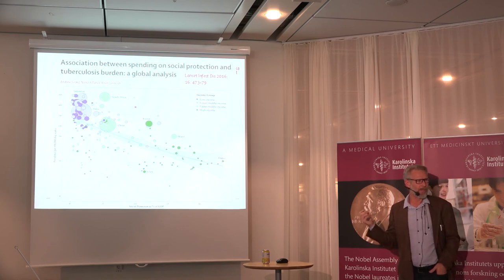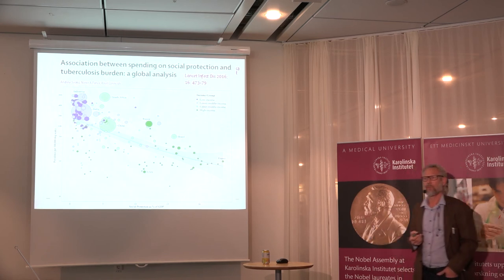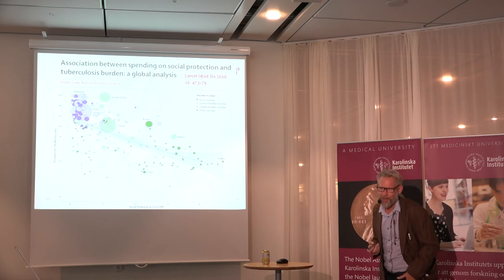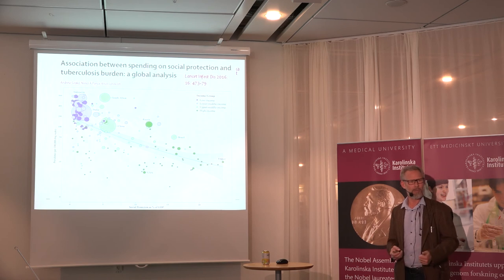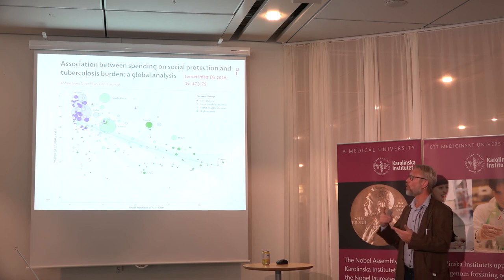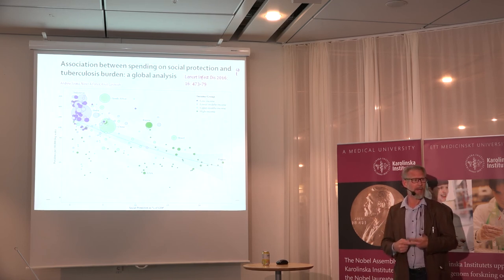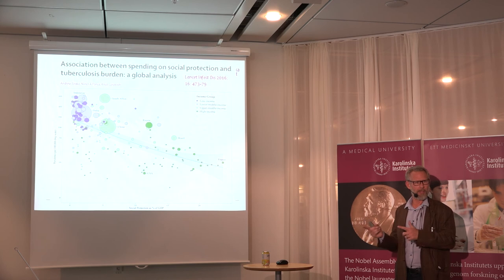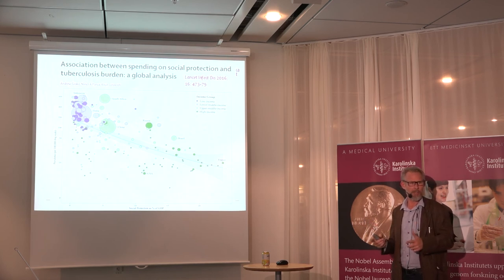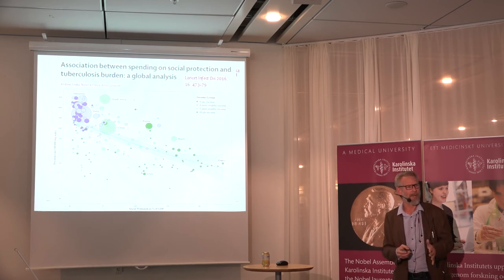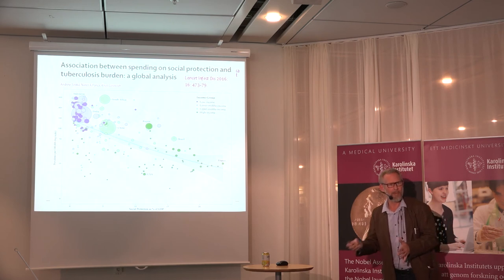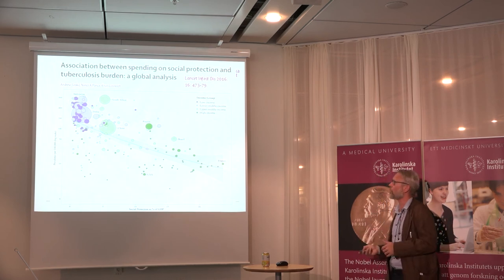To drive home the point that social protection is important: we did a study correlating social protection spending in all countries of the world with TB incidence, controlling for GDP per capita, income inequality, and investments in the healthcare sector. We still found that if you increase spending on social protection per se, you will have a reduction in TB incidence. The marginal effect was biggest for the poorest countries — it makes a bigger difference to invest a little more in social protection if you're a poor country.